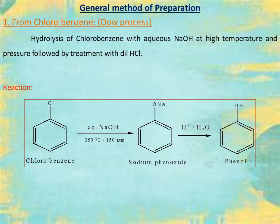There are four important methods for the preparation of phenols. The first and most important method is from chlorobenzene. We can also name this method as the Dow process. In the Dow process, the starting material is chlorobenzene. The reaction involves chlorobenzene reacting with aqueous NaOH at a temperature of 350 degrees centigrade and 150 atmospheric pressure.